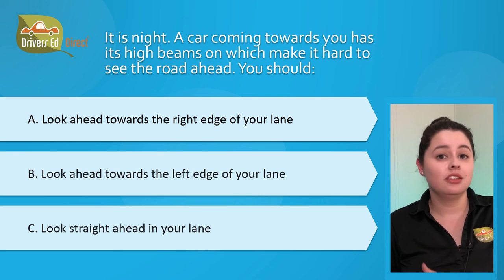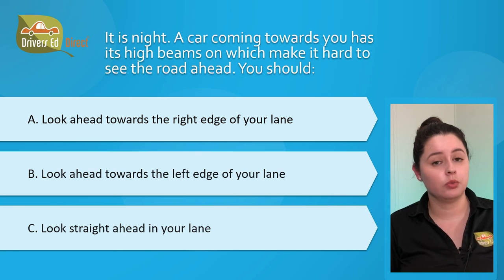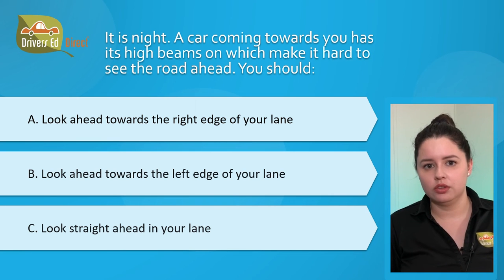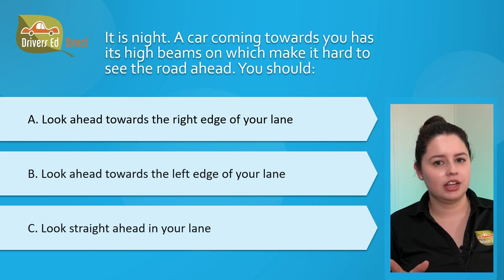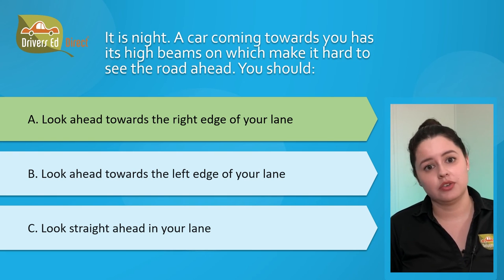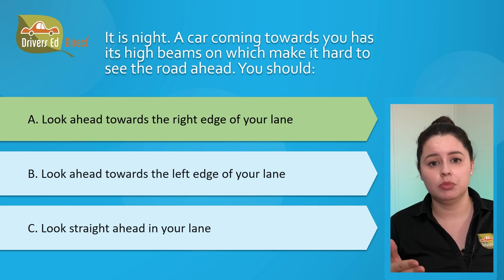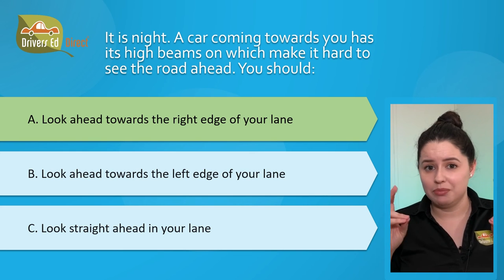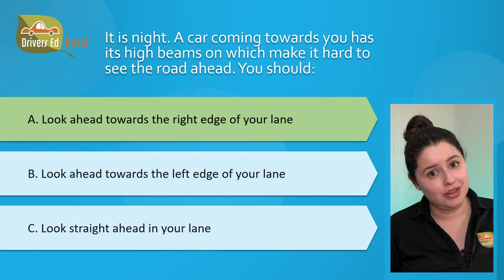Question number twenty-one: it is night and a car coming towards you has its high beams on, making it hard to see the road ahead. You should: A) look ahead towards the right edge of your lane, B) look ahead towards the left edge of your lane, or C) look straight ahead in your lane. The correct answer is A, look ahead towards the right edge of your lane. Don't look directly into oncoming headlights — look toward the right edge and watch the oncoming car out of the corner of your eye. Don't retaliate by keeping your bright lights on, or both of you will be blinded.